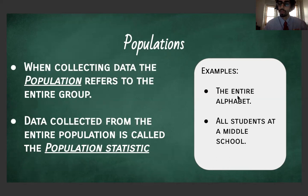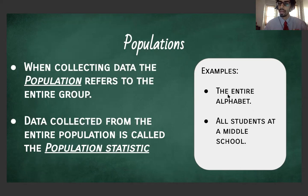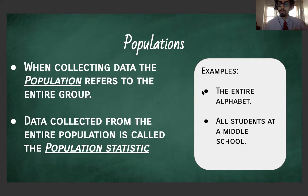Examples we can refer to would be the entire alphabet — the whole alphabet, A through Z. Another example of a population would be all students in a middle school. Before we had vowels in the alphabet and seventh graders in a middle school; this time we have everyone included in those groups of interest. So think: sample equals part, population equals whole.